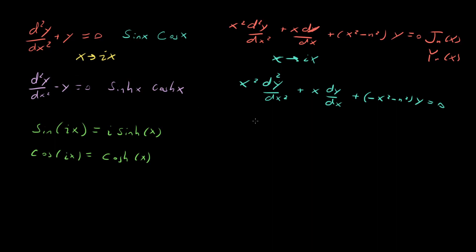The solutions to this are modified Bessel functions. We have the modified Bessel function of the first kind, I_n(x), and the modified Bessel function of the second kind, K_n(x).